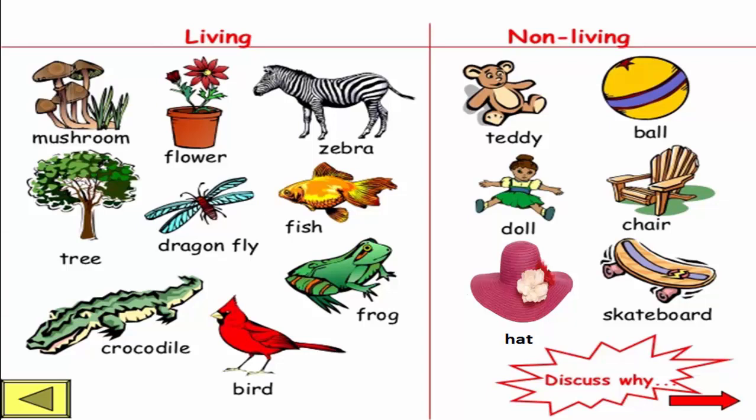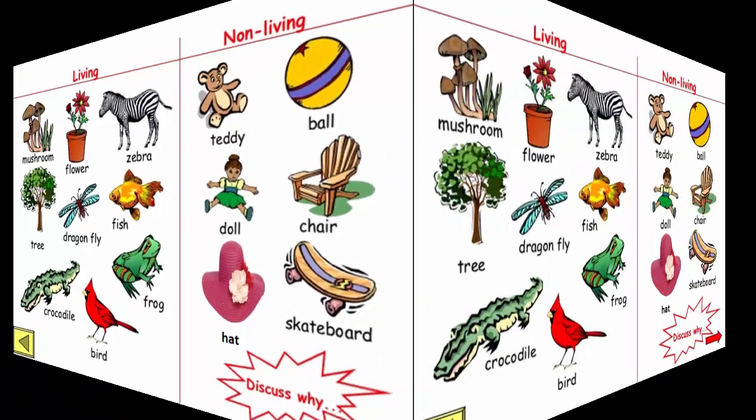Now we explain non-living things. Teddy — this is a toy, they cannot move. Ball. Doll. Chair. Skateboard. They are all non-living things because they have no need to eat or move.